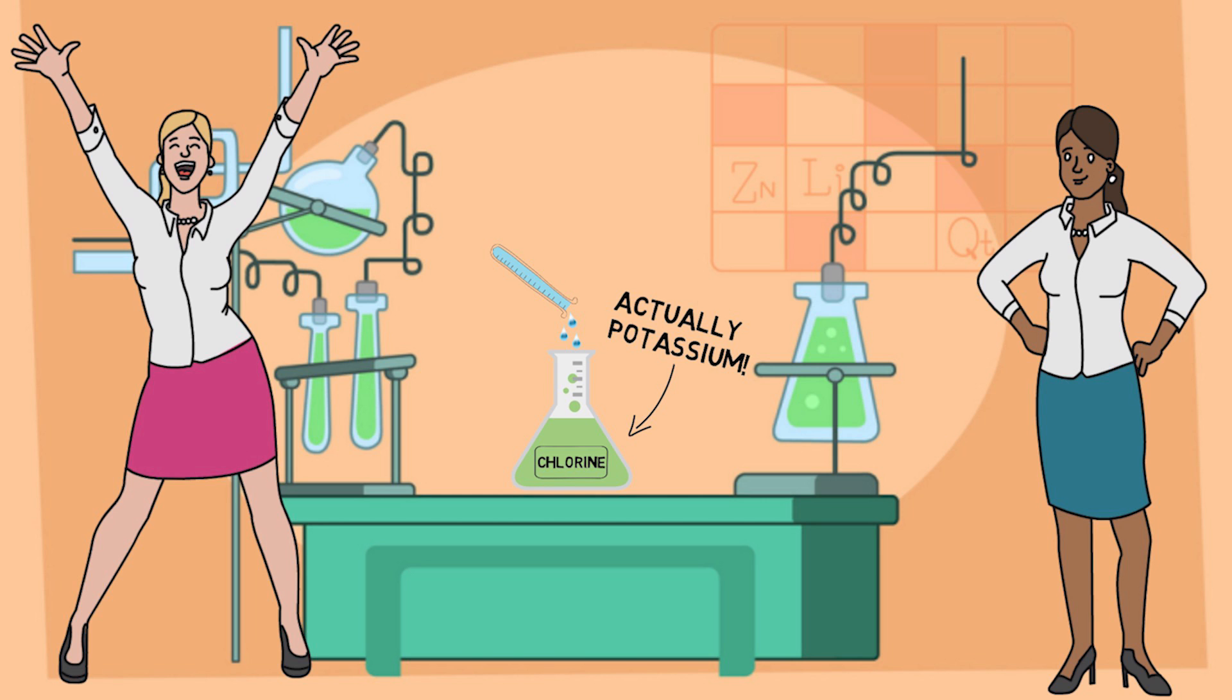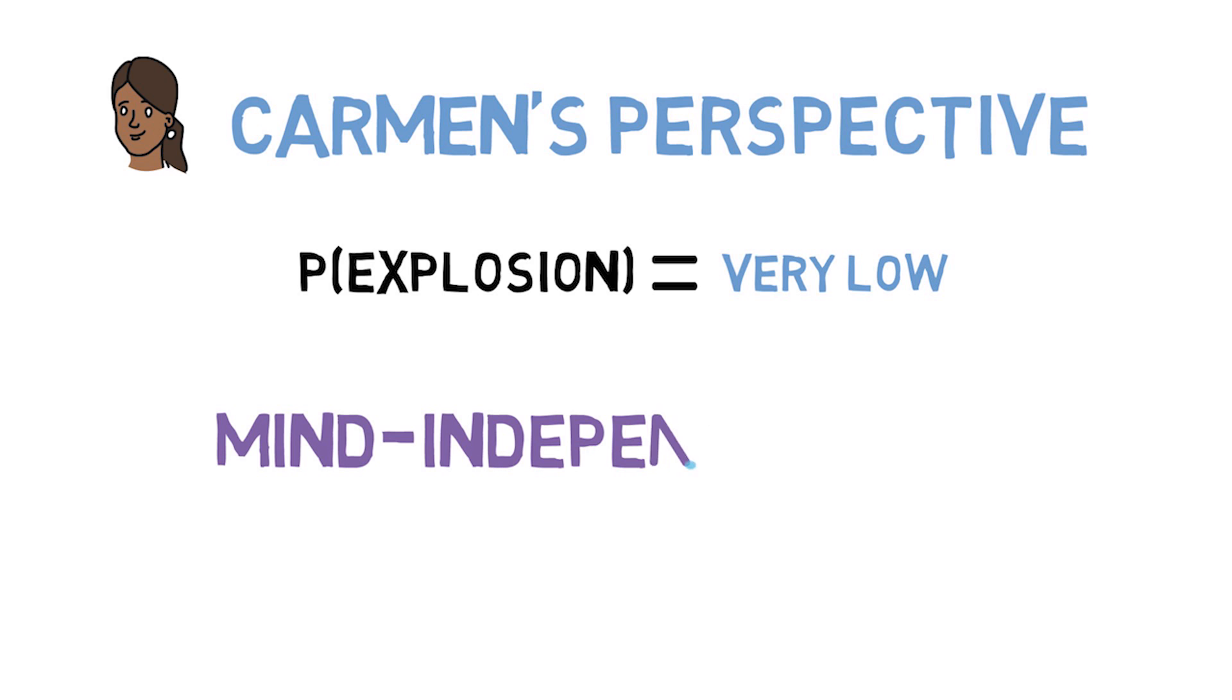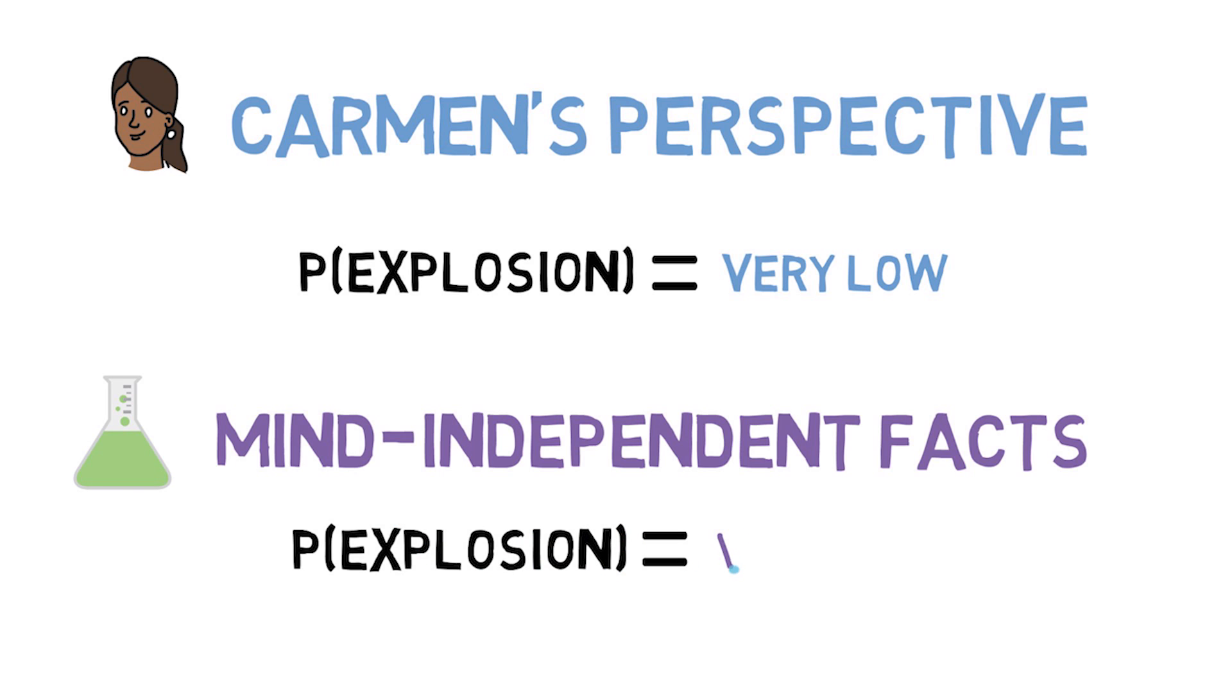What can we say about what is likely to happen in this experiment? Well, since Carmen doesn't know about the tampering, Carmen's degree of belief, or credence, in there being an explosion is very low. But since the tampering did in fact occur, there is also a clear sense in which an explosion is very likely. The mind-independent facts about what the world is like make it very likely that an explosion will occur.